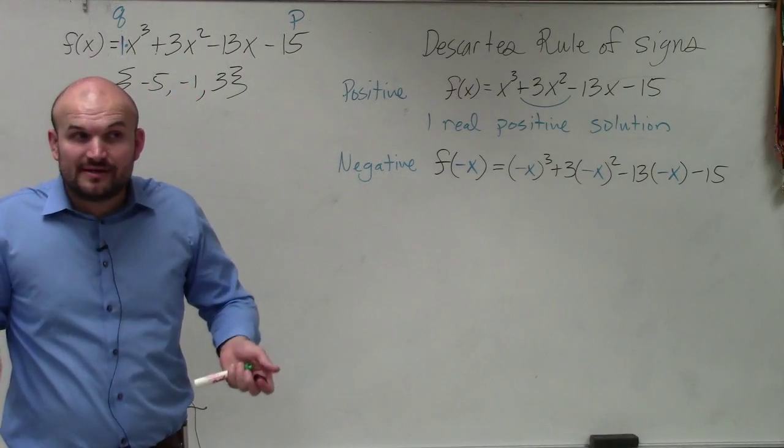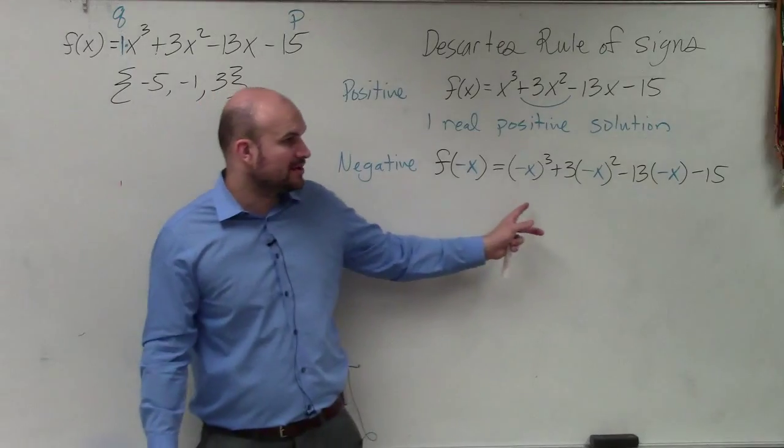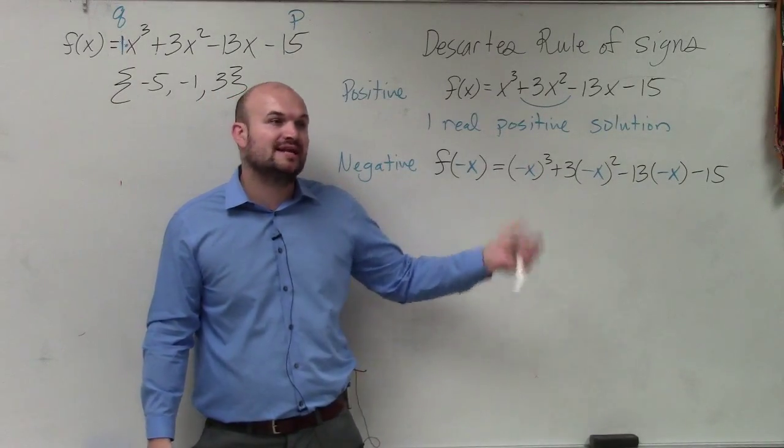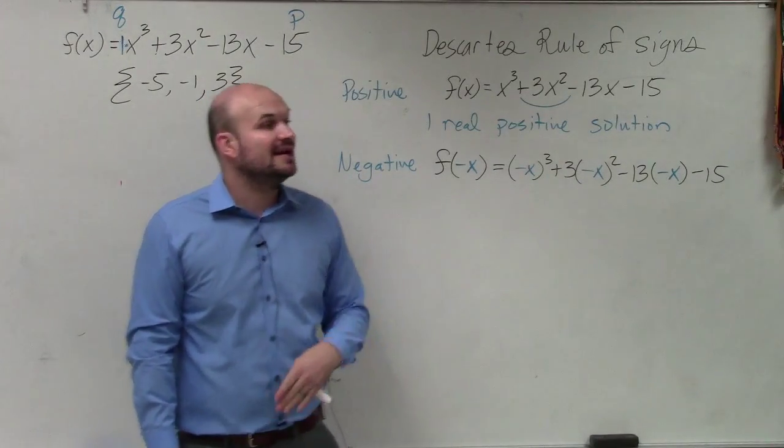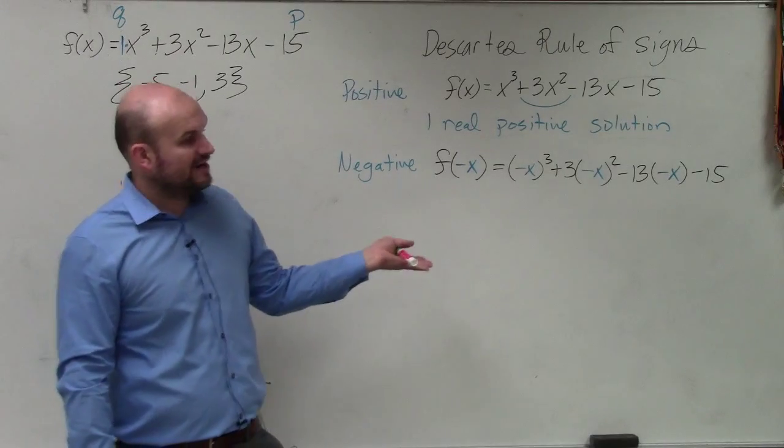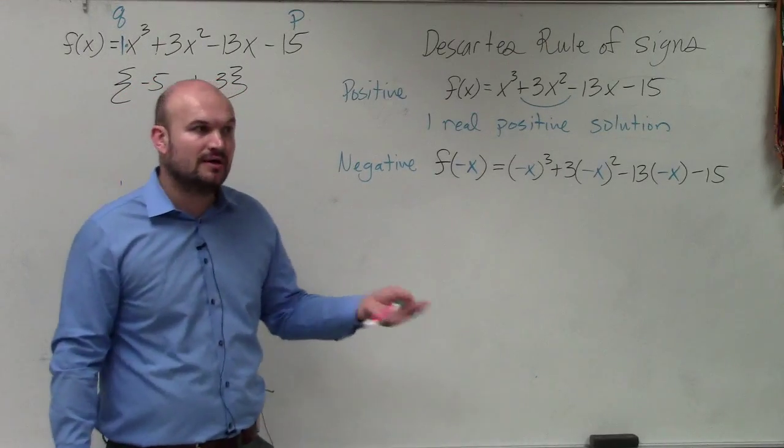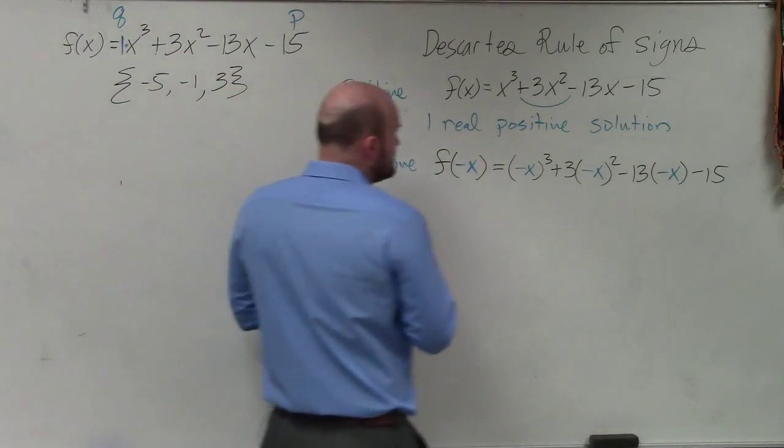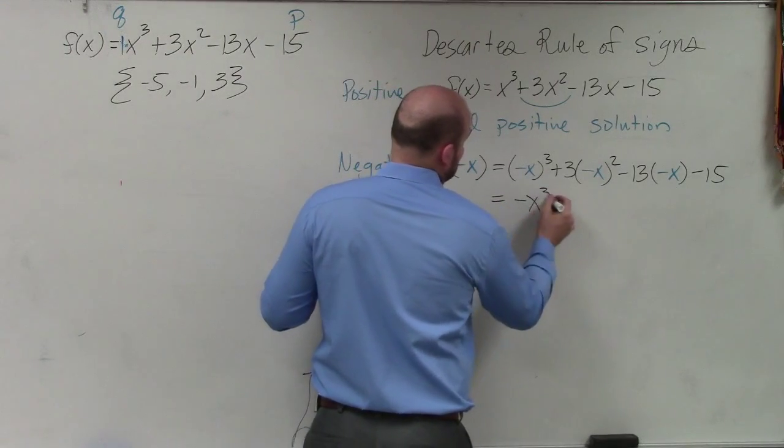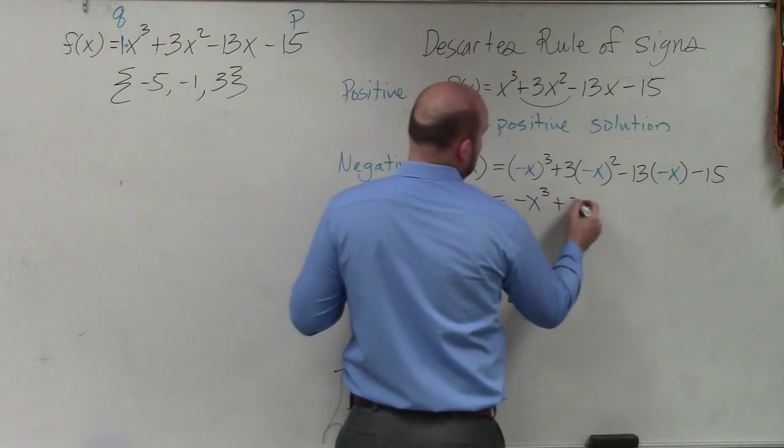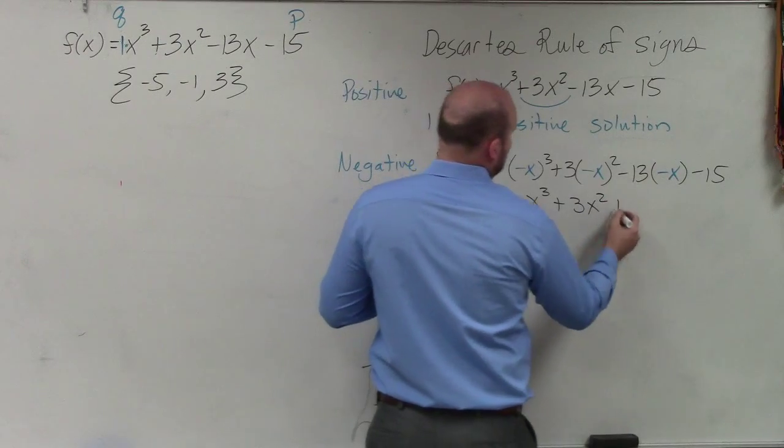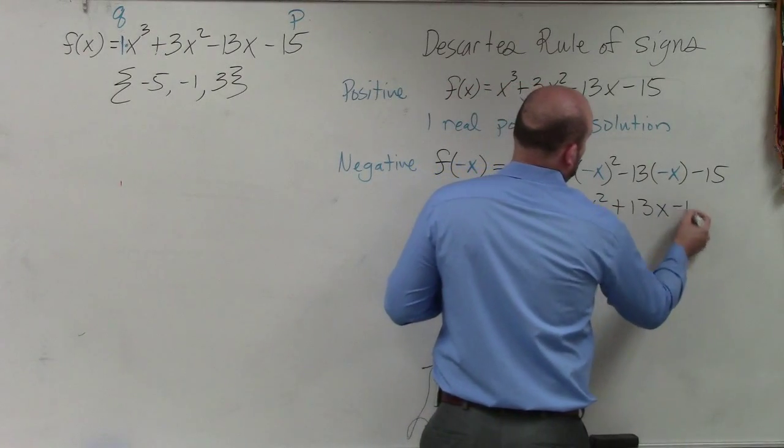Does everybody see what I did? I changed the input value to a negative instead of the positive x. Now we've got to simplify this. So please remember, any time you have a negative number raised to an odd power, that is always still going to be negative. Any time you have a negative number, or variable, raised to an even power, it becomes positive. So therefore, this simplified is negative x cubed. That becomes positive, that becomes positive, minus 15.